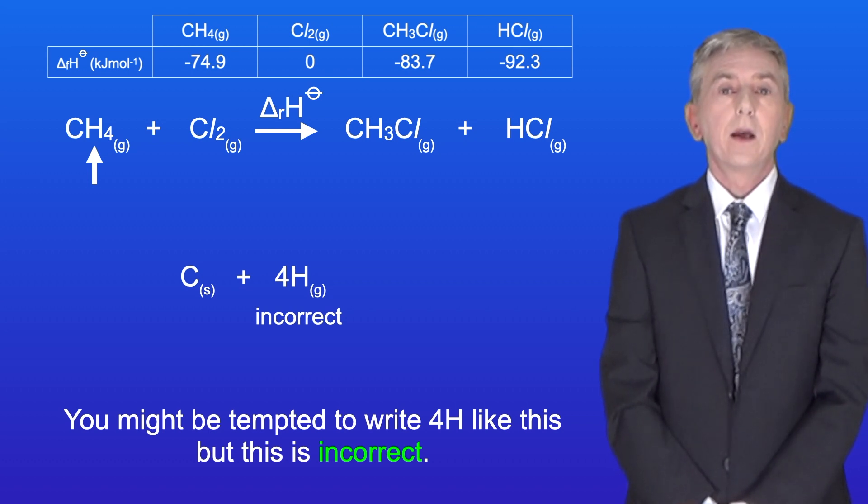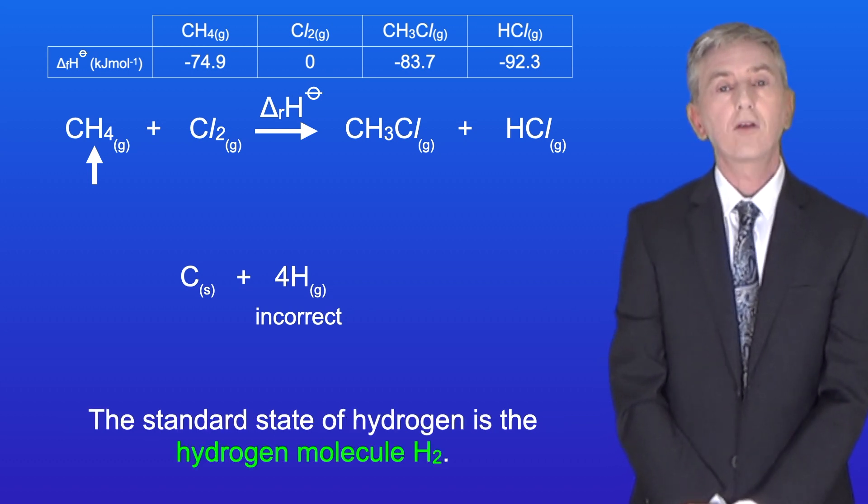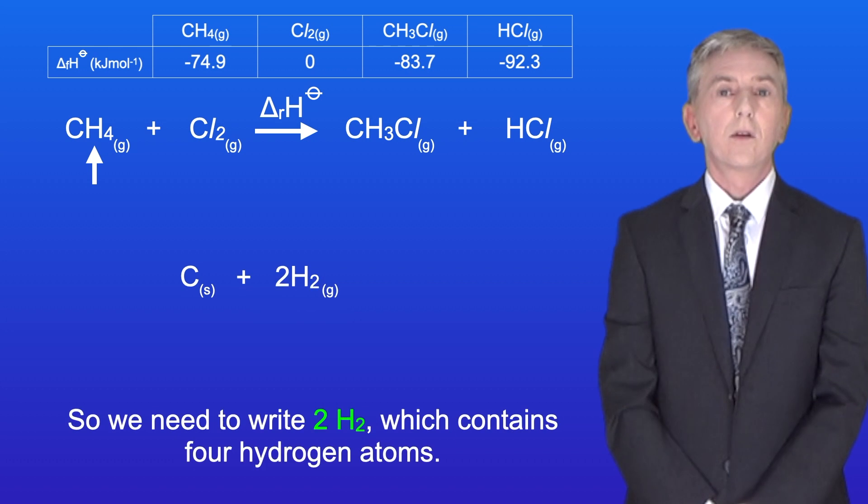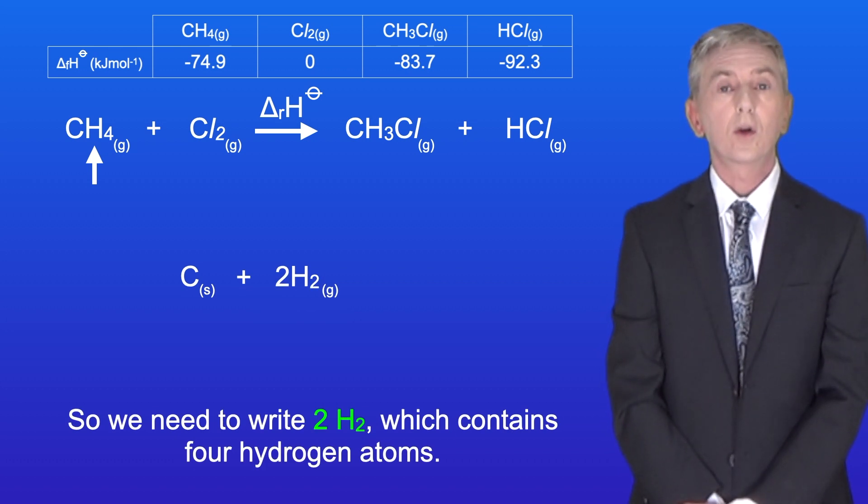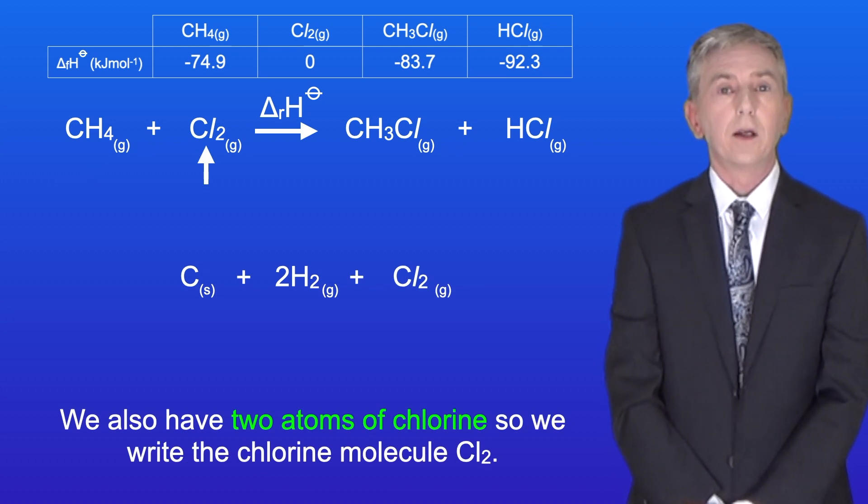The standard state of hydrogen is the hydrogen molecule H2. So we need to write 2H2, which contains four hydrogen atoms. We also have two atoms of chlorine, so we write the chlorine molecule Cl2.